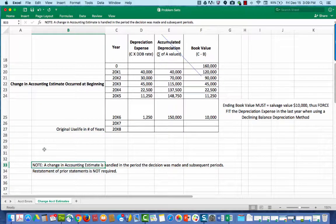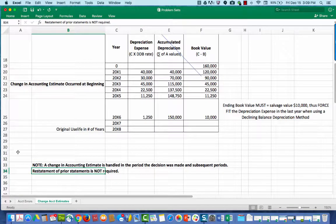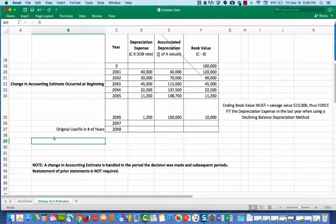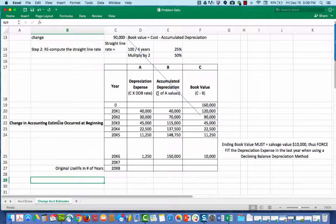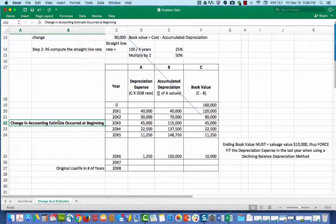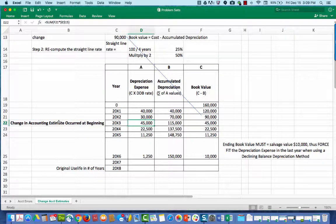This is an important note. A change in accounting estimate is handled in the period in which the decision was made and all subsequent periods. In other words, you do not go back and change prior financial statements. You do not make any adjustment to the retained earnings account. You simply recompute the depreciation. The moment that you decide or the company decides that they want to change the estimate, you recompute the annual depreciation amount and finish depreciating that asset until its final year. And then you're done. So you don't go back and restate anything.